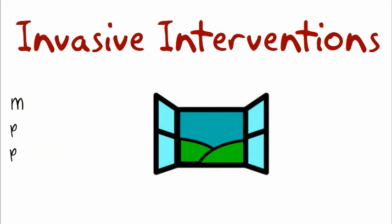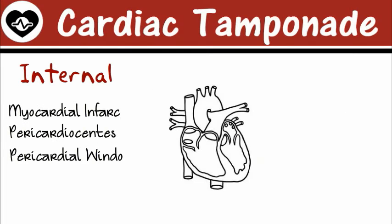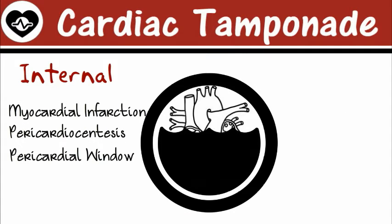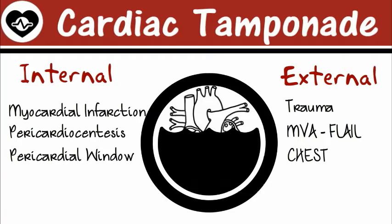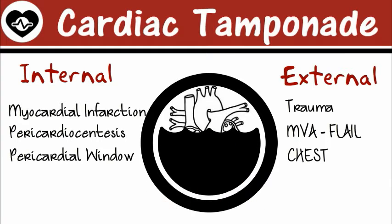Or, the patient has a pericardial window that is put into place after a myocardial infarction to handle the fluid. The nurse monitors this outgoing fluid from the pericardium into a drain, and you monitor that drain for kinks or clots. To review the causes: internal causes include myocardial infarction with invasive cath, pericardiocentesis with needle aspiration, or a pericardial window. External causes include motor vehicle accident, chest trauma such as flail chest or blunt trauma — all of which can cause fluid around the heart, or cardiac tamponade.